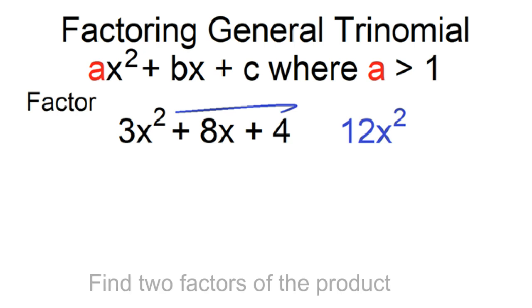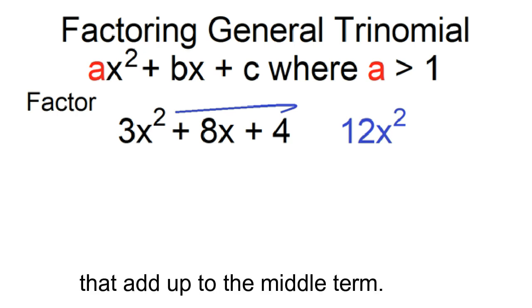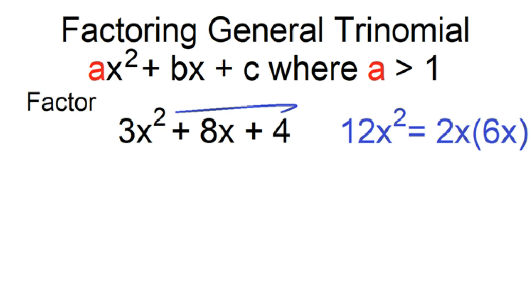Find two factors of the product that add up to the middle term. 2x and 6x: 2x times 6x is 12x², and 2x plus 6x is 8x.